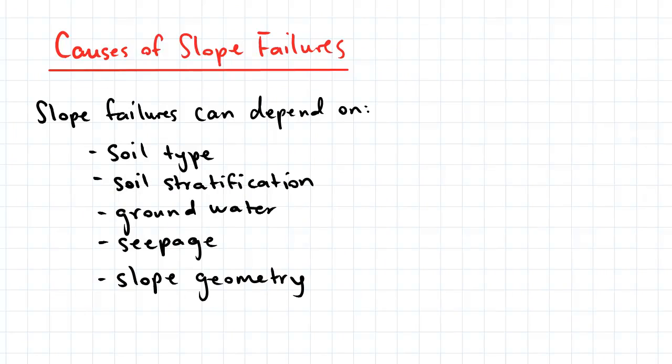Slope failures can depend on the soil type, soil stratification, which refers to the layering of the soil, and groundwater.